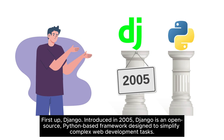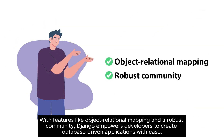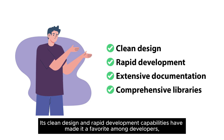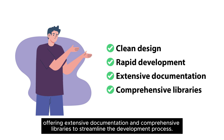First up, Django. Introduced in 2005, Django is an open-source, Python-based framework designed to simplify complex web development tasks. With features like object-relational mapping and a robust community, Django empowers developers to create database-driven applications with ease. Its clean design and rapid development capabilities have made it a favorite among developers, offering extensive documentation and comprehensive libraries to streamline the development process.